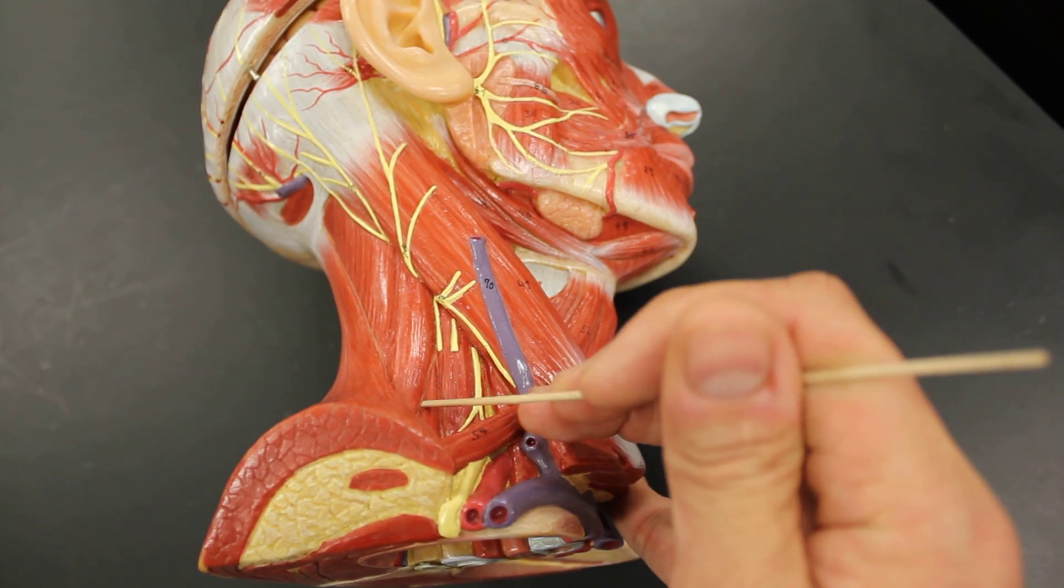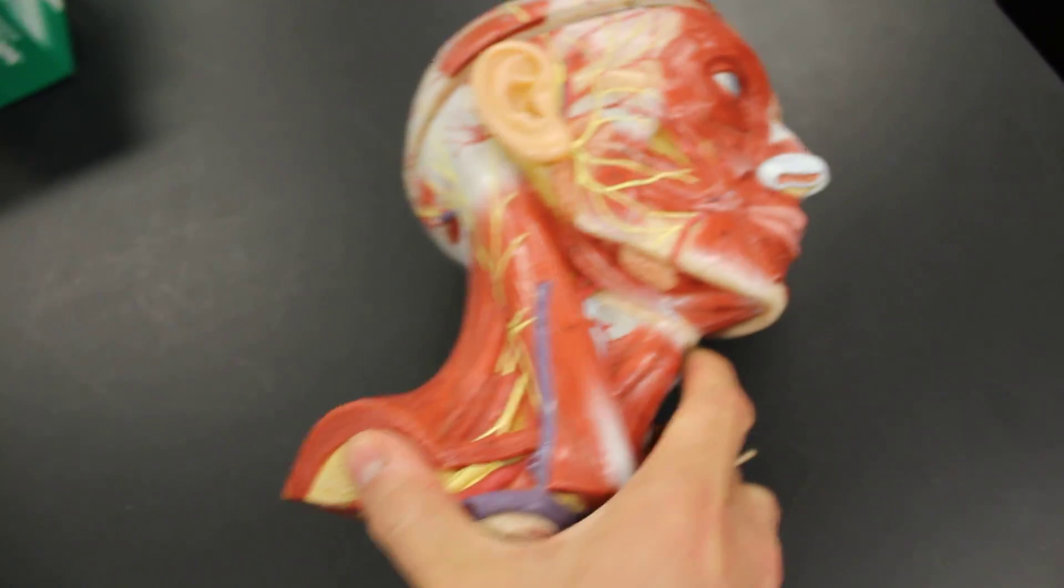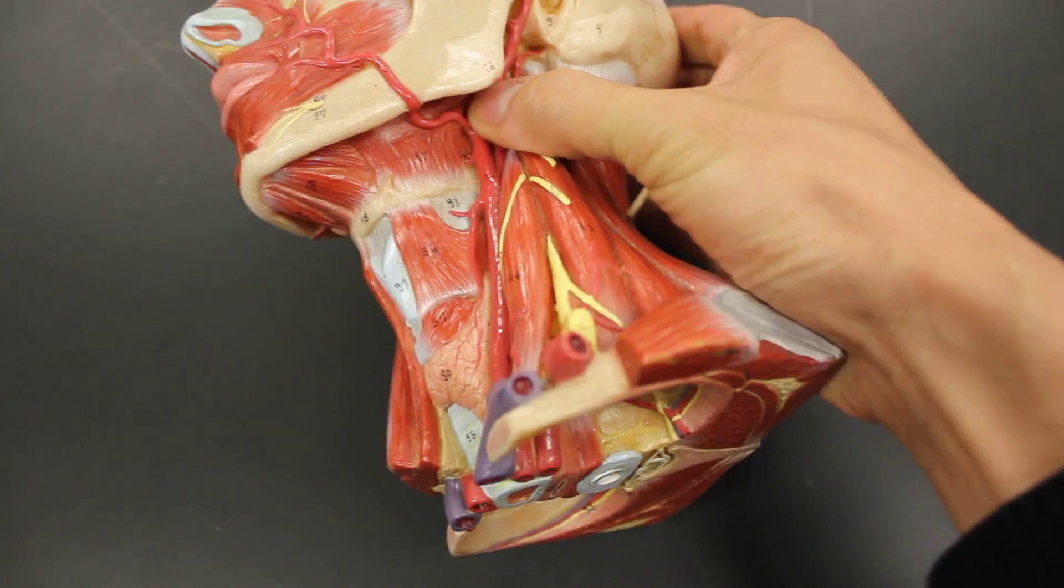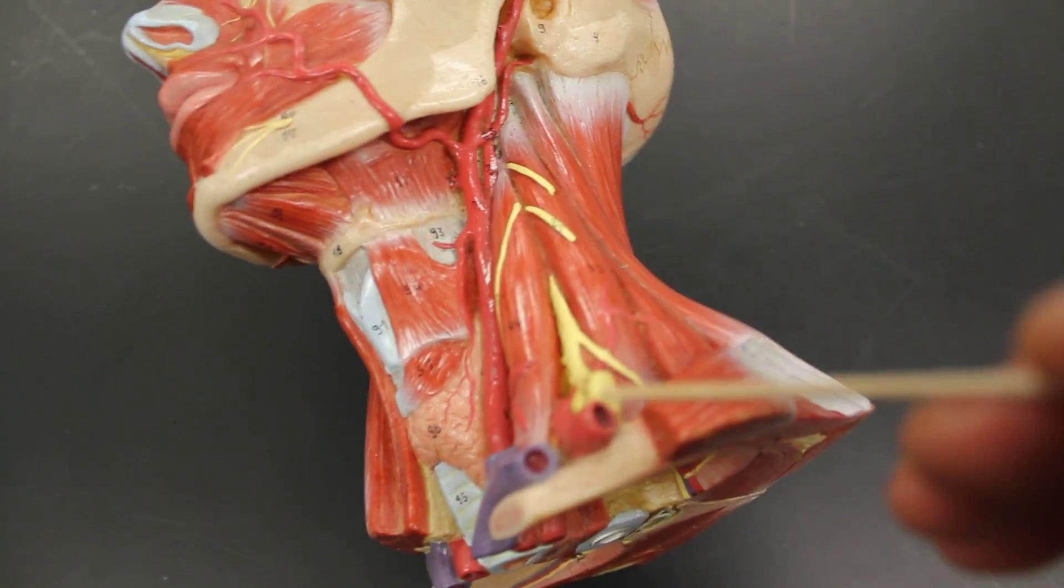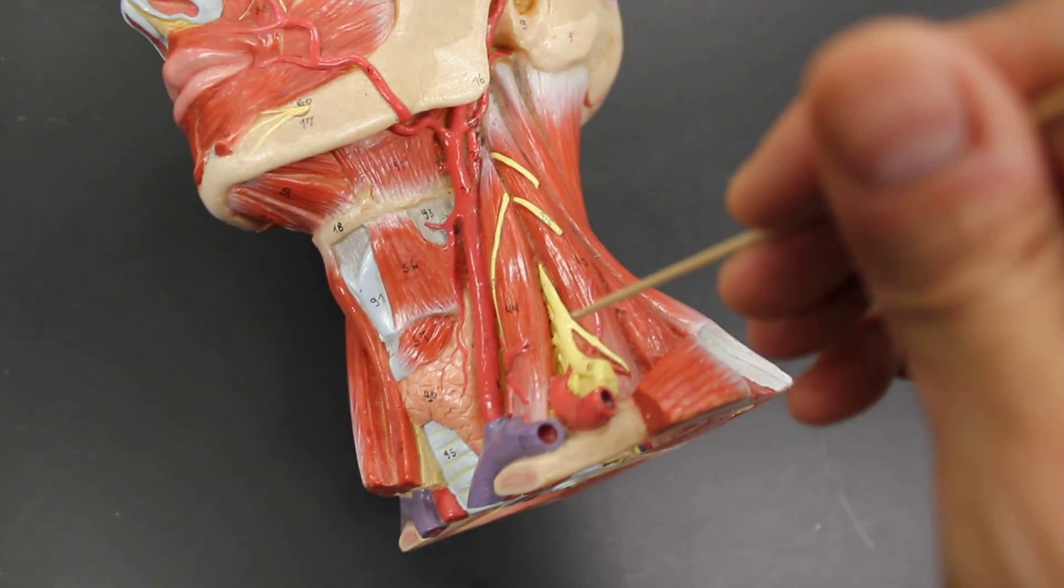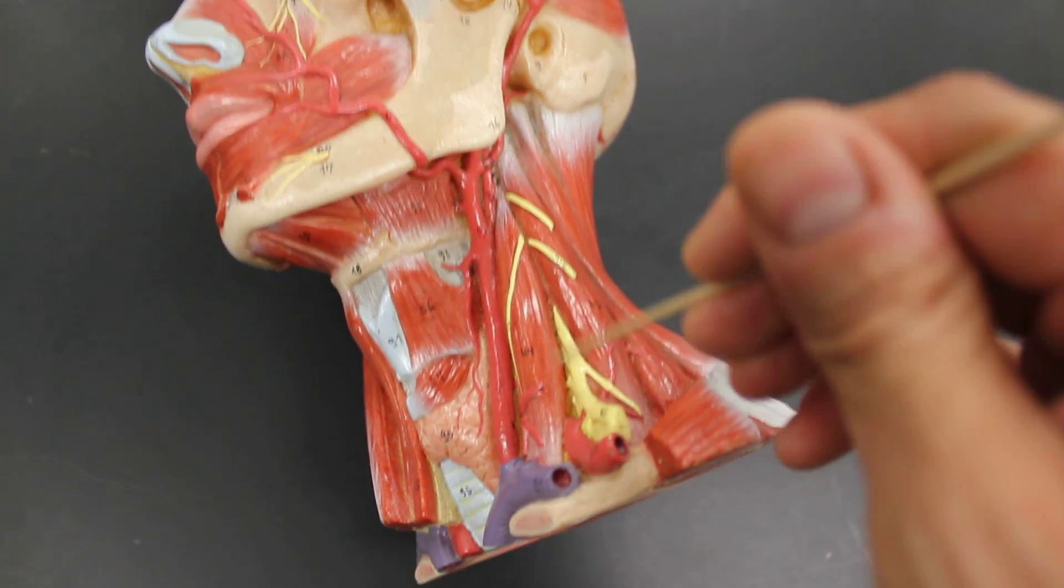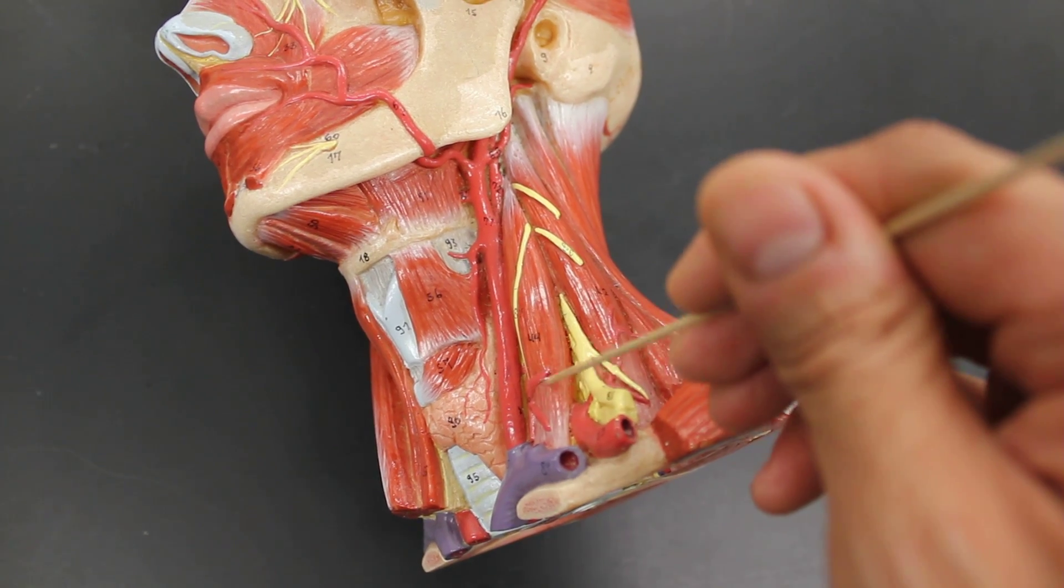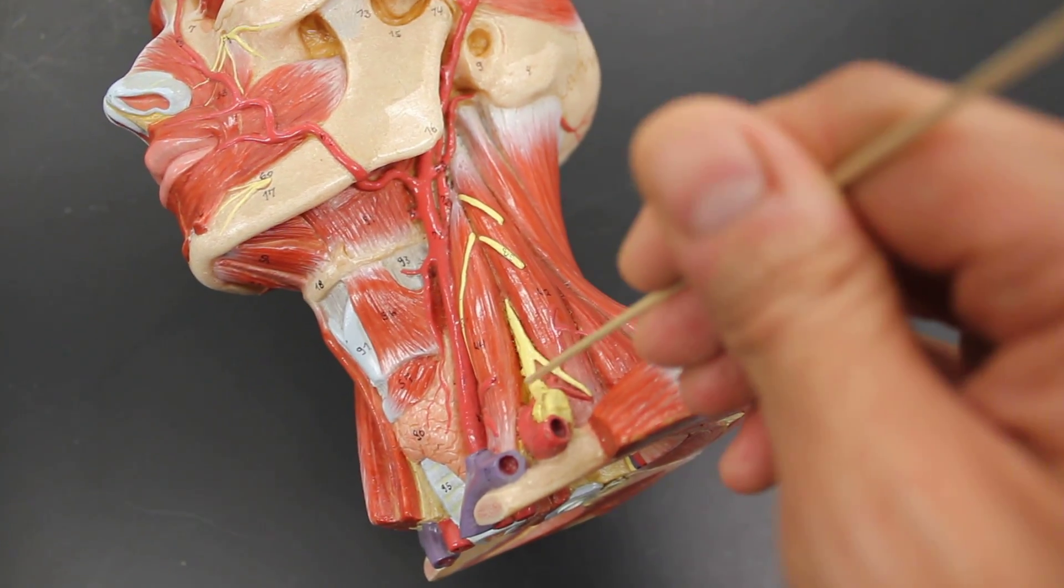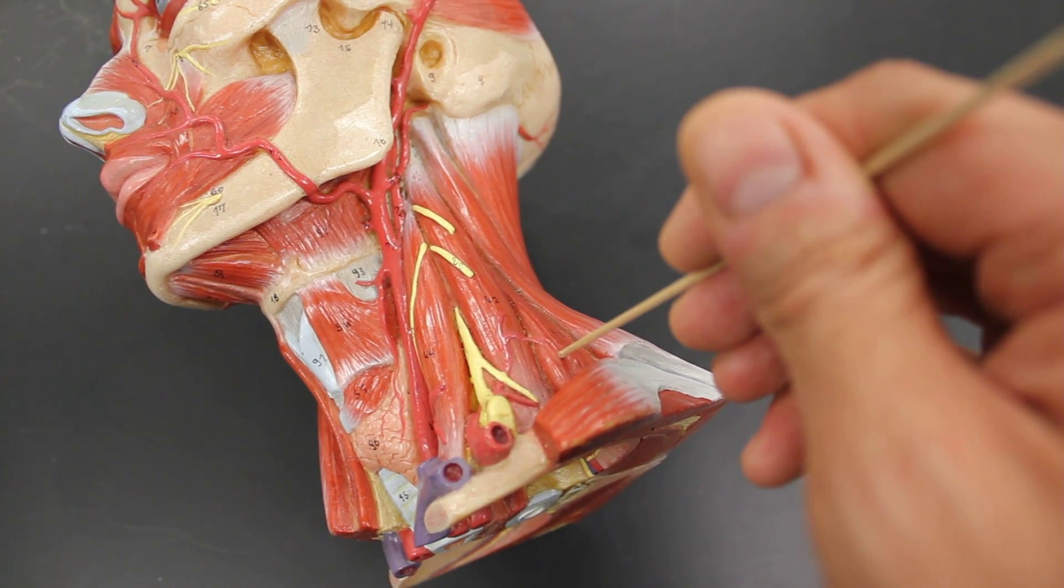We have the anterior, middle, and posterior scalenes. One of the biggest hints about the scalenes is that in between the anterior and the middle scalenes are going to be a bunch of nerves. You can see these nerves coming through here. So this would have to be the anterior scalene, middle scalene because the nerves come in between, and then this is the posterior scalene.